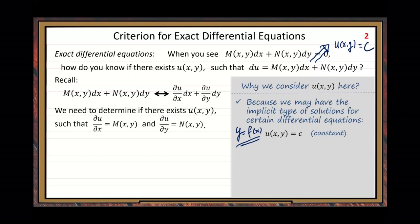We need to determine if there exists such a U function such that partial U over partial X equals M function, and partial U over partial Y equals the N function. We want to see if such a U function exists. Fortunately, there is another nice property in multivariate calculus — high-dimension calculus. We need to use another critical property here.